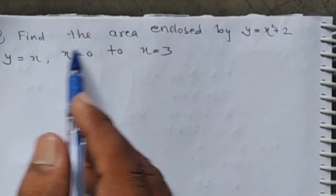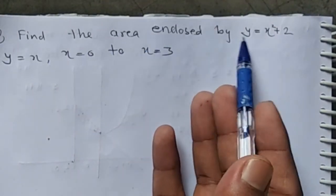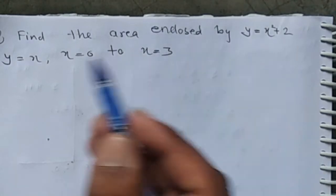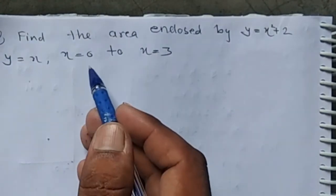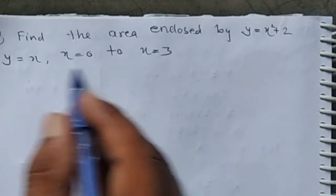This is the third part of question number 3. Find the area enclosed by y equals x squared plus 2, y equals x, x equals 0, to x equals 3.